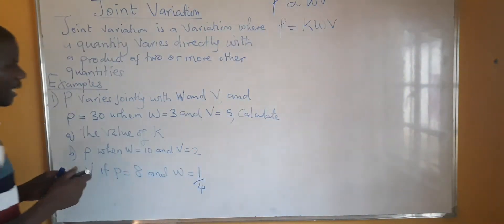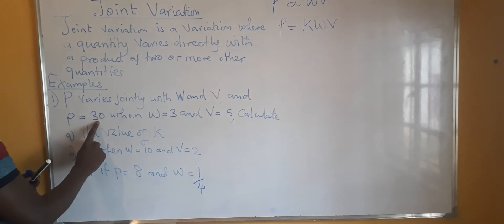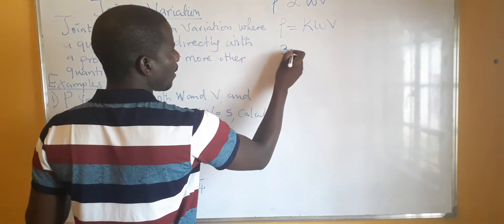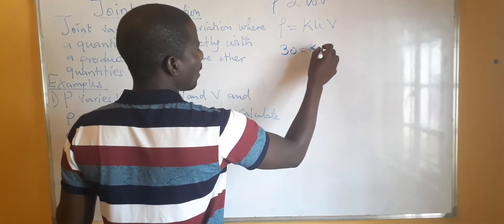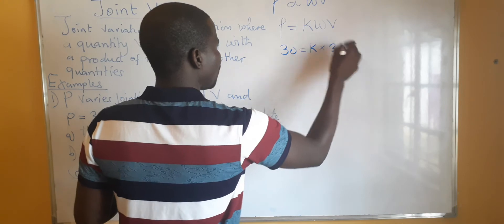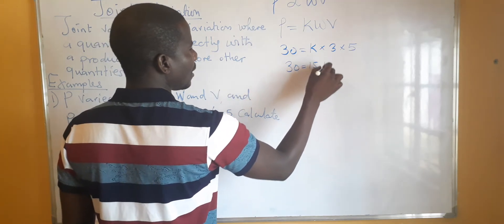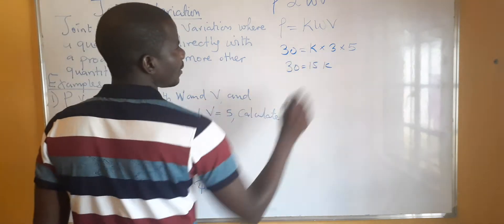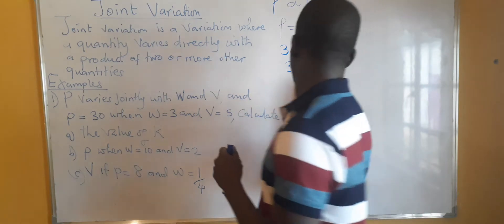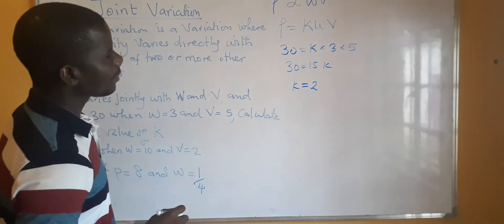We say P equals 3, which equals k multiplied by W which is 3 multiplied by V which is 5. This gives us 3 equals 15k. When you multiply 3 multiplied by 5, we get 15. So to find the value of k, we need to divide both sides by 15, and k would be 2.